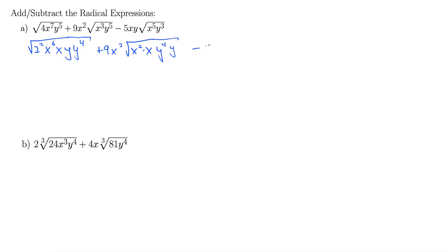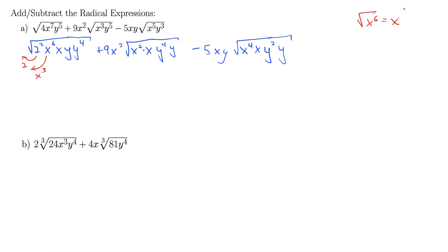On to the next term: 5xy is still out in front. x to the 5th we're going to break into x to the 4th times x. And y cubed — we need something divisible by 2, so y squared times y. Now let's see what makes it out of the square root. The square root of 2 squared is 2. Square root of x to the 6th is x cubed — we're dividing the exponent by 2. For the same reason, y to the 4th comes out as y squared.